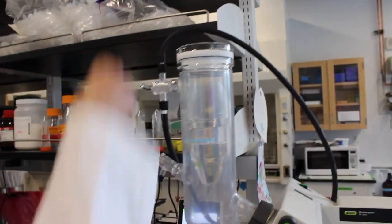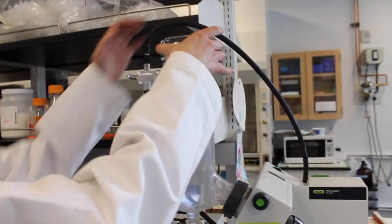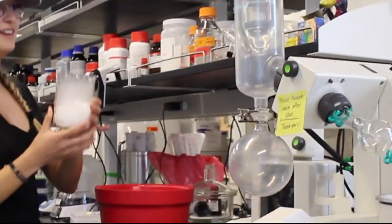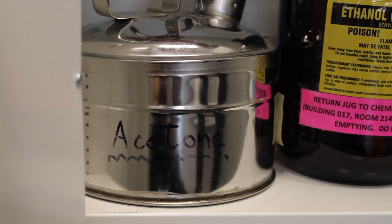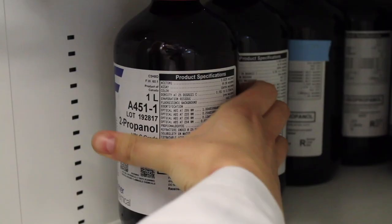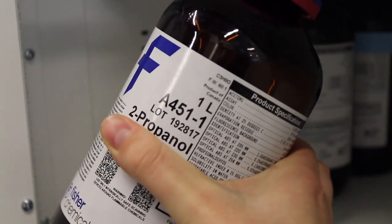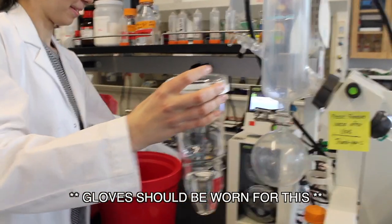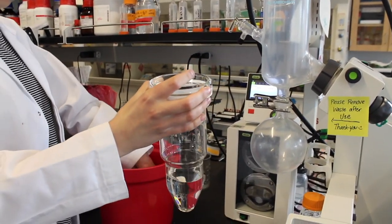Next is to prepare the cold finger. This allows your solvent to condense after it has evaporated through the bump trap. You need to make sure you have dry ice in the appropriate solvent such as acetone or isopropanol. If the Rotovap was in use before, there will likely be acetone or isopropanol already in the finger. If so, you'll just need to add dry ice.